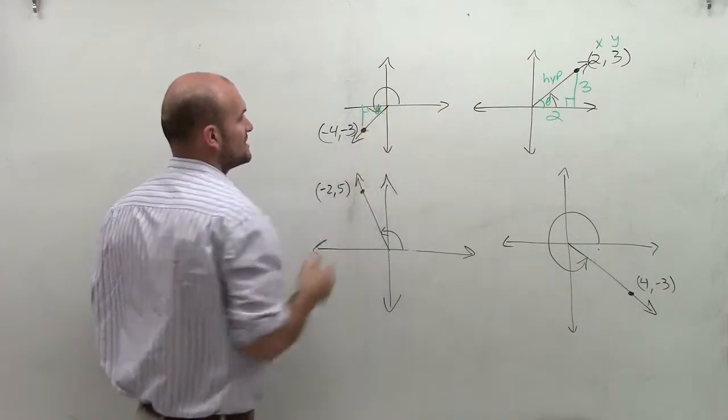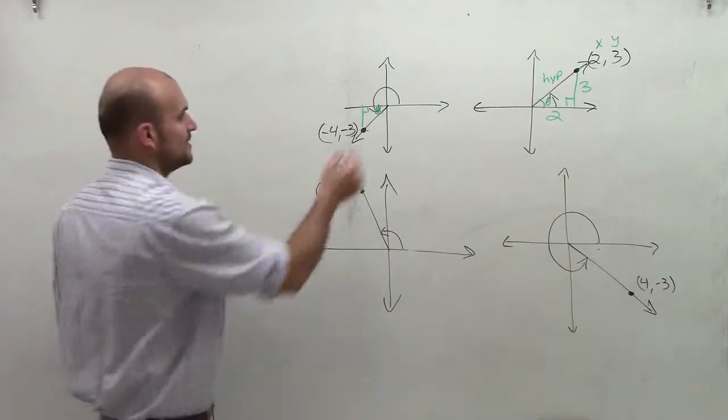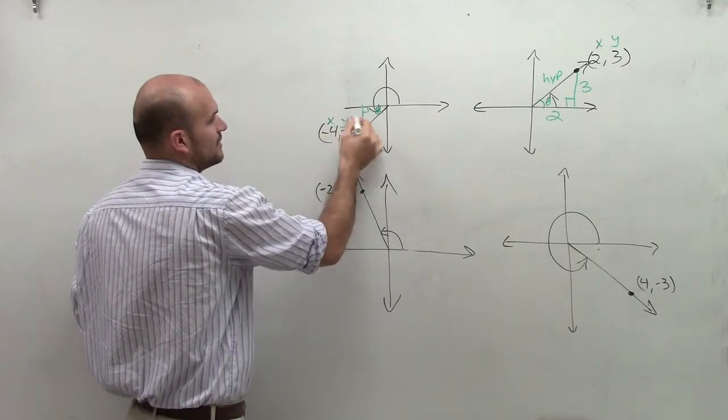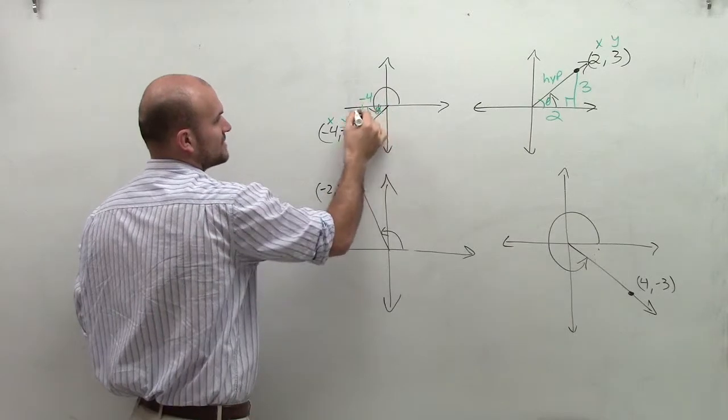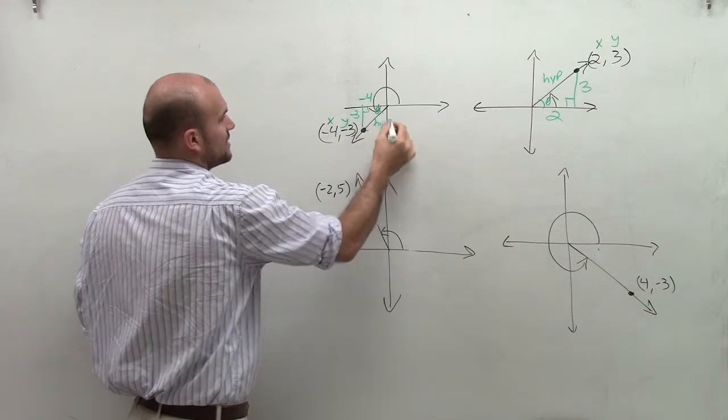My theta is always going to be my central angle. So therefore, at this point, I have my x and my y. So this is negative 4, this is negative 3, and there's your hypotenuse.